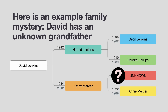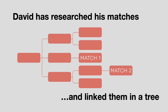Here's an example family mystery. We have someone called David, and David has an unknown grandfather. His mother Kathy was adopted. So David has studied his match list and he's been able to narrow down which matches are via that unknown grandfather, and he's been able to figure out how two of them are actually linked to each other. So now he's got a small family tree which he knows must somehow be linked to his biological family tree.